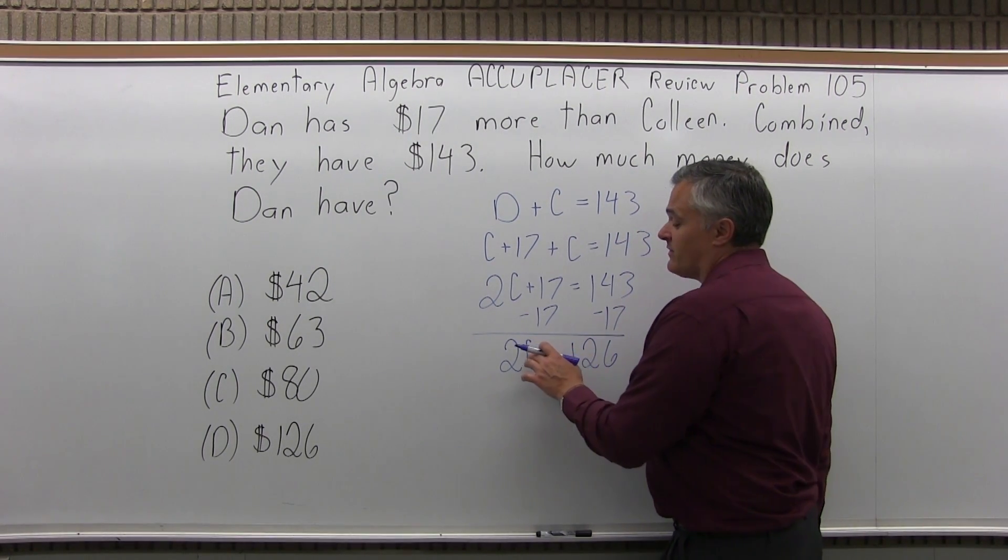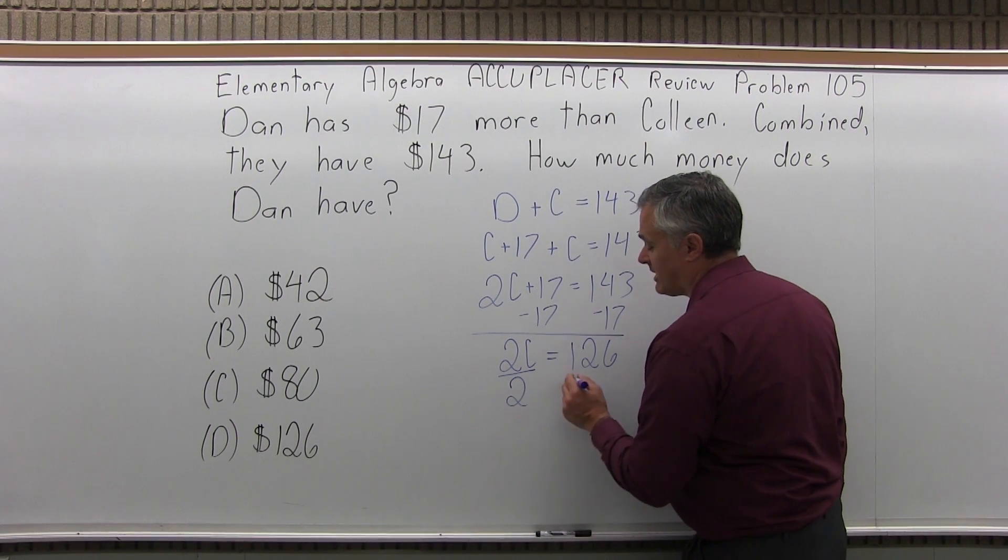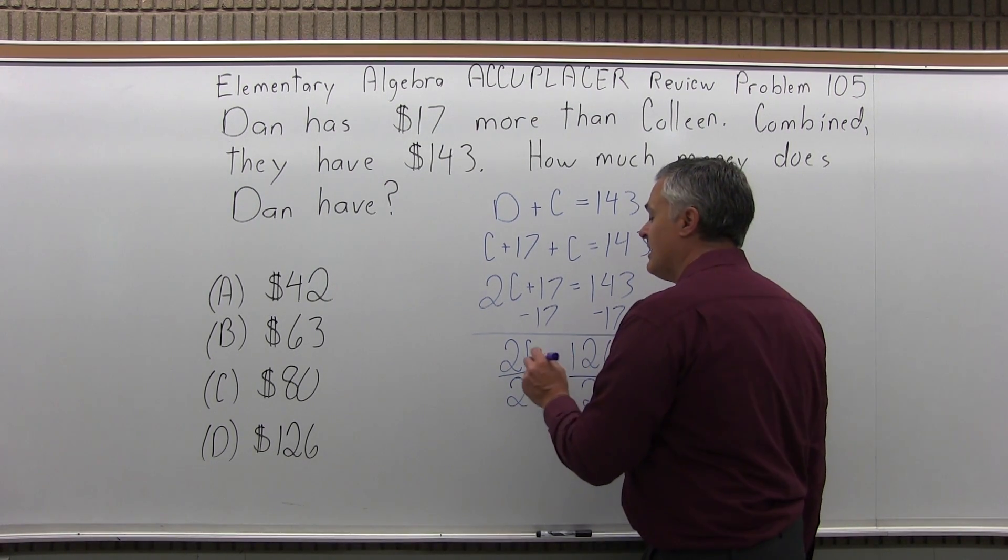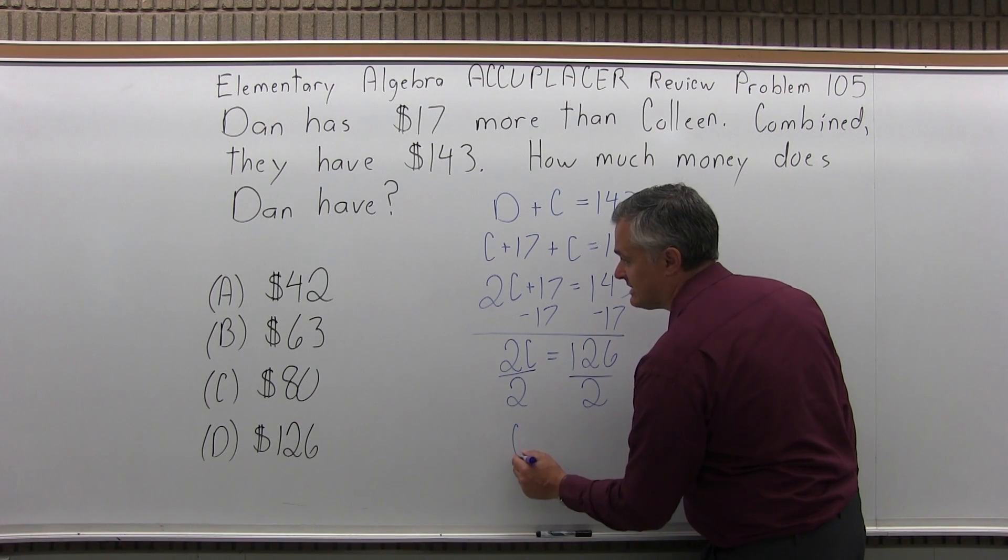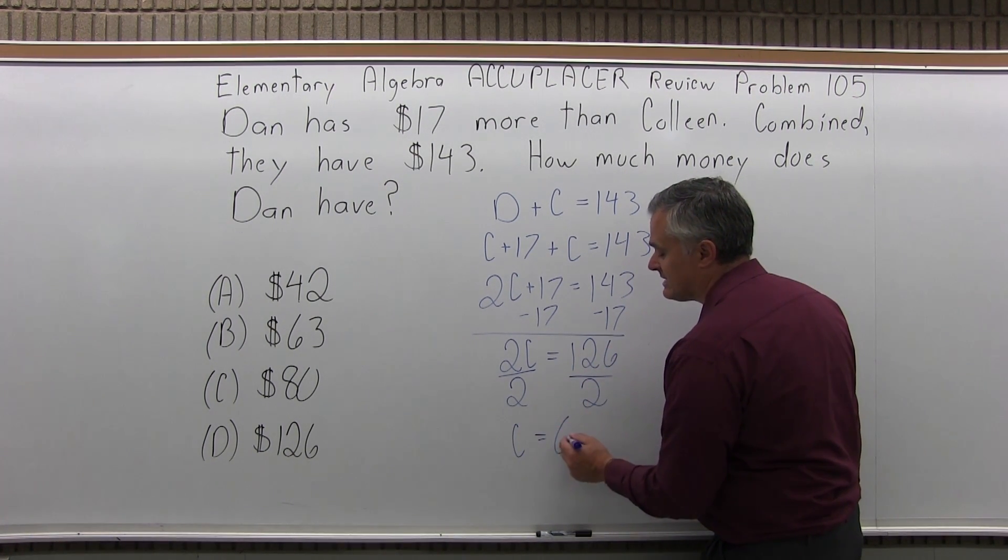So to solve for C, I need to get rid of the 2. So easy enough, let's divide the left side by 2, and if I do that, I must divide the right side by 2. And 2C over 2 gives me a C. And 126 divided by 2 is 63.